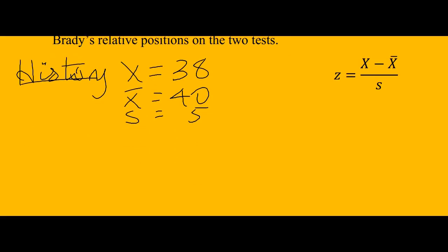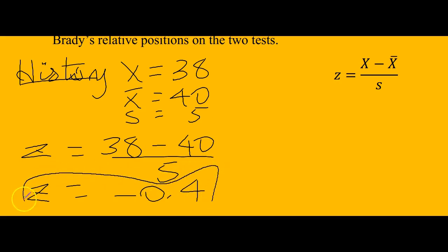We plug this into the equation. So the z for history is going to be 38 minus 40 divided by 5, which gives us negative 0.4.